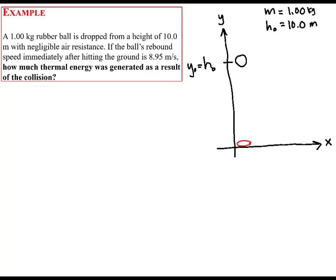The ball's speed immediately after hitting the ground is 8.95 meters per second — that's the final speed. The ball's initial speed when it was first dropped is 0 meters per second, since it was dropped from rest. Our goal is to find how much thermal energy was generated as a result of the collision, which is the energy that goes into deforming the ball.